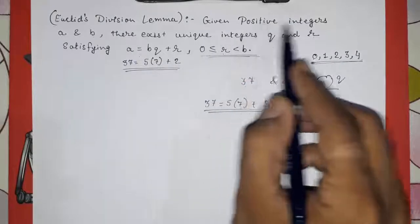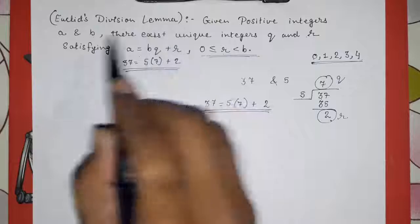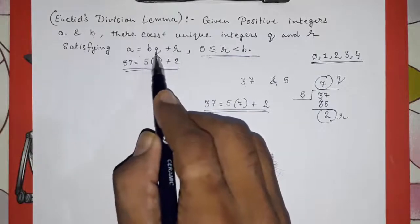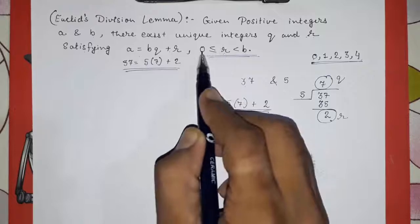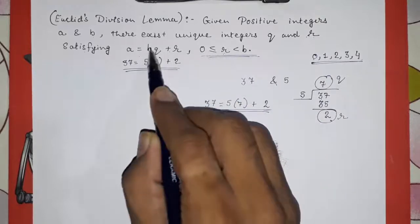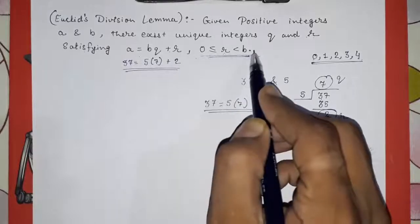So, given positive integers a and b, there exist unique integers q and r satisfying a is equal to bq plus r, where r is greater than or equal to 0 but less than the divisor. So, now you got my point what I want to tell you.